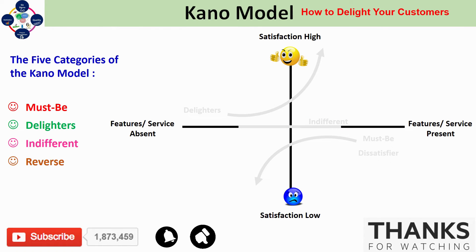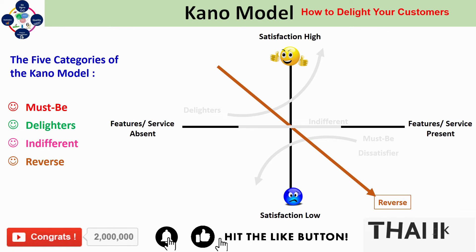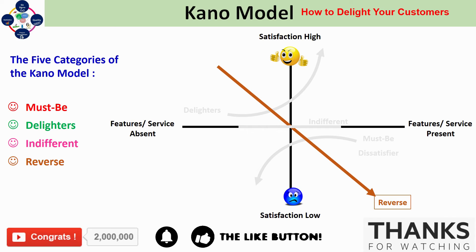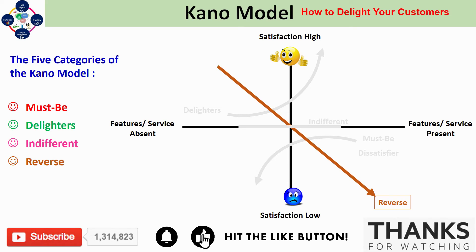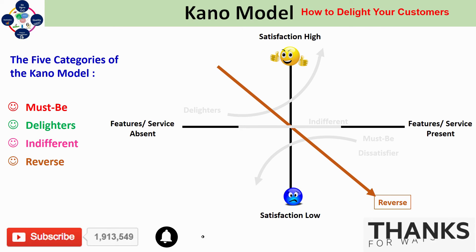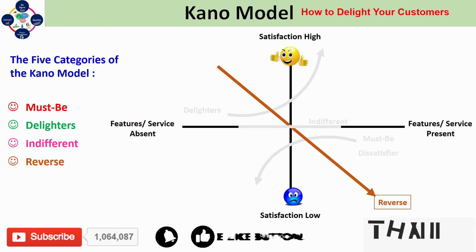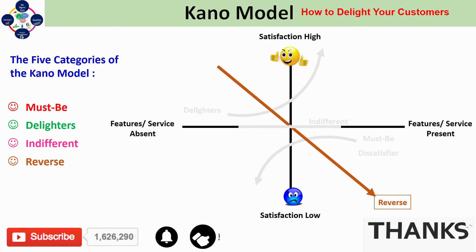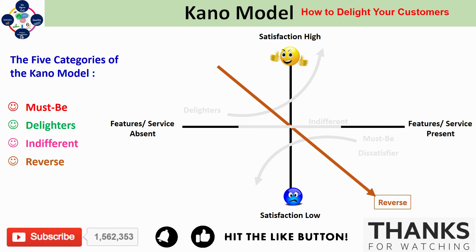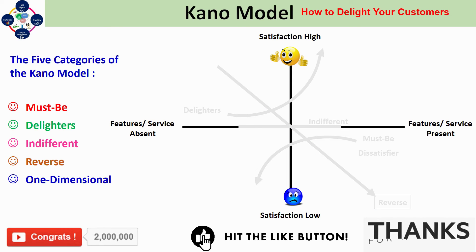Next we have reverse features. Reverse features are truly the inverse of one-dimensional performance features. In other words, reverse features are those which actually detract from the user's level of satisfaction as functionality increases. Examples include too many buttons on a steering wheel, or software that is too complex and not user-friendly. Adding too many features or functions that detract from the product's actual performance will demotivate the user. Reverse features are those which simply add no value to the product or user.